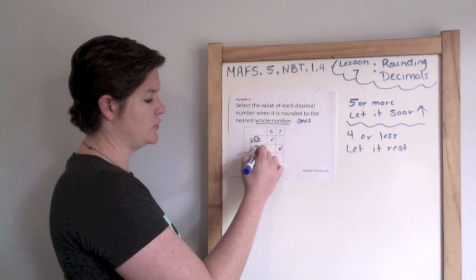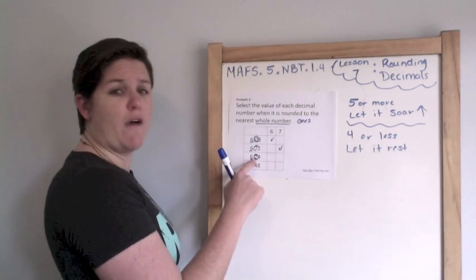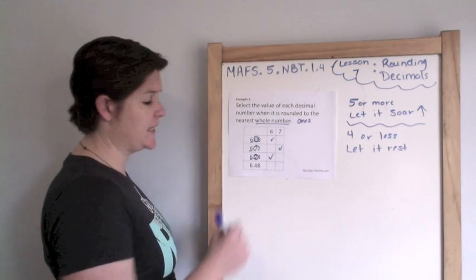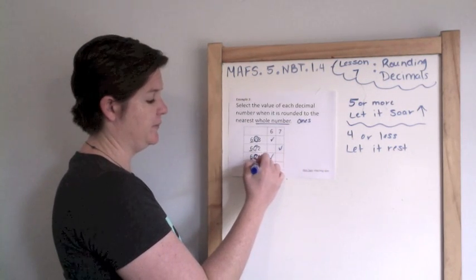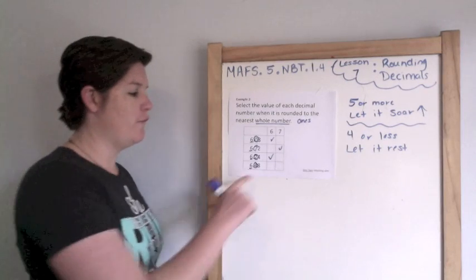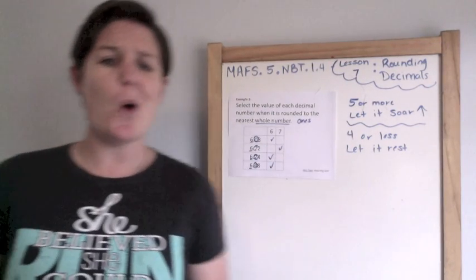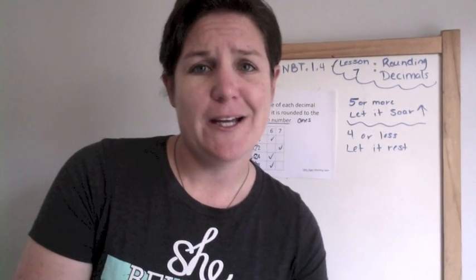Look next door. That's a two. Four or less, you better let it rest. Keep it at six. And look next door to our four. Four or less, you better let it rest. It would stay at six holes.